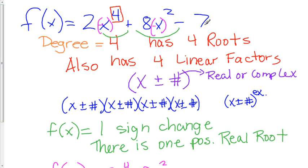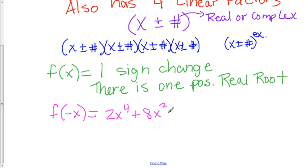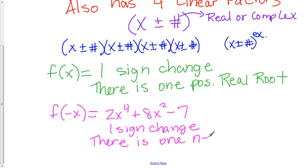If you put a negative x into that, it's just minus 7 still. So we still have one sign change. Since there is one sign change, there is one negative real root.